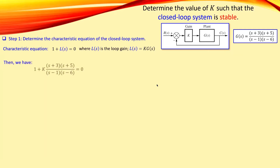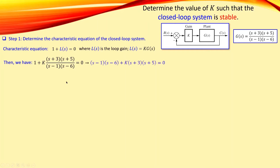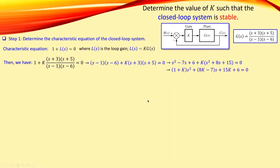If I now substitute the values, I have one plus K times the open-loop transfer function equals zero. I want to get rid of the fractions, so I multiply both sides by the denominator, which is (s minus 1) times (s minus 6). Then I expand the parentheses to get a polynomial expression, and I collect the like terms to reach the final form.